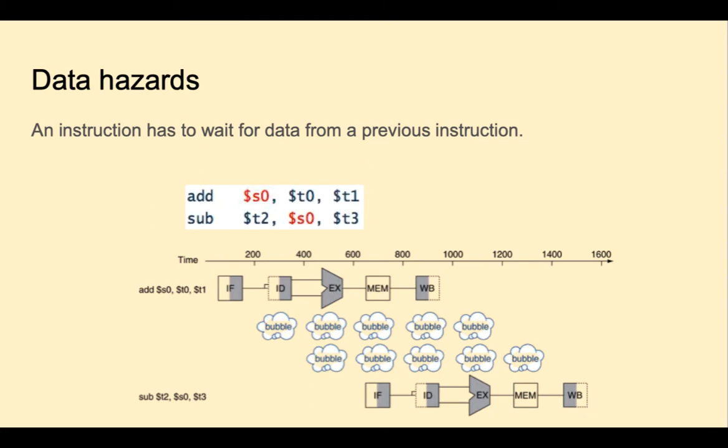Let's look at data hazards. In these two instructions, we see that the destination register S0 in the add is the same as one of the source registers in the sub. The problem is that S0 won't be written to the register file until this stage here. So if we want to read it, that means we would need for the pipeline to stall twice. Two pipeline stalls or bubbles.